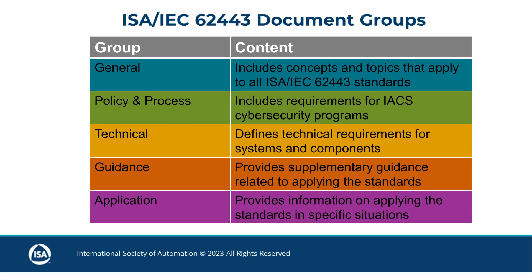Documents in the ISA/IEC 62443 series may be organized into several groups, each with a specific focus. The first group is general in nature and applies across the entire set of standards. The second group addresses the policies and procedures necessary for an effective security program. The audience for these documents includes people who develop and operate industrial automation and control system, abbreviated IACS, cybersecurity programs for their enterprises.